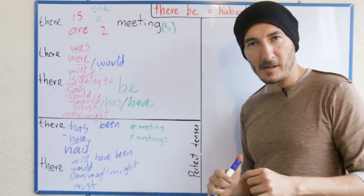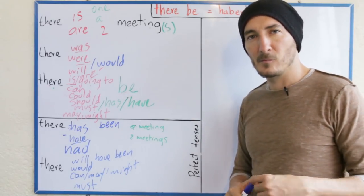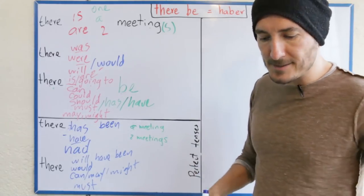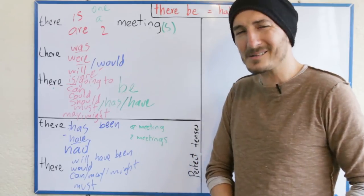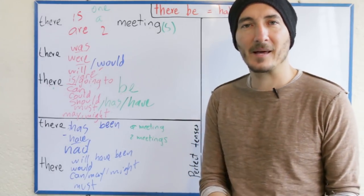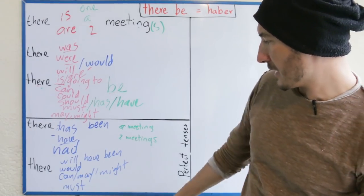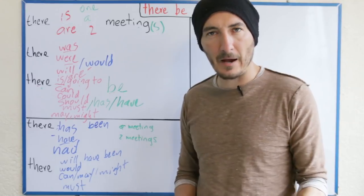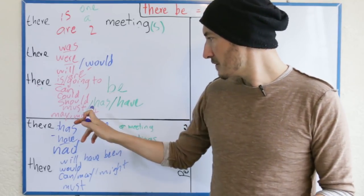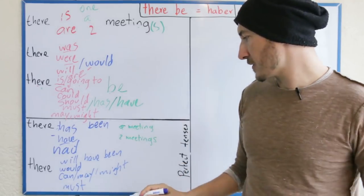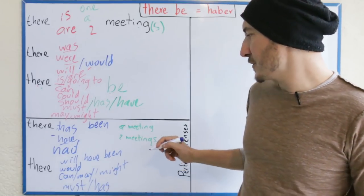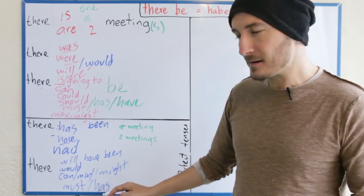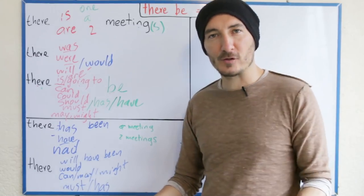Si hablo muy rápido y les parece un poco confuso, recuerden que se puede graduar la velocidad en todos los videos de YouTube. Búsquenlo — hay unos engranajes donde se puede arreglar eso, ponerlo más rápido o más lento. Me está faltando una — así como el 'must' es de conclusión, 'tiene que haber habido una reunión para que haya pasado eso', ¿cómo quedaría como obligación? Igual que lo de 'has to'. Entonces: there has to have been — tiene que haber habido.